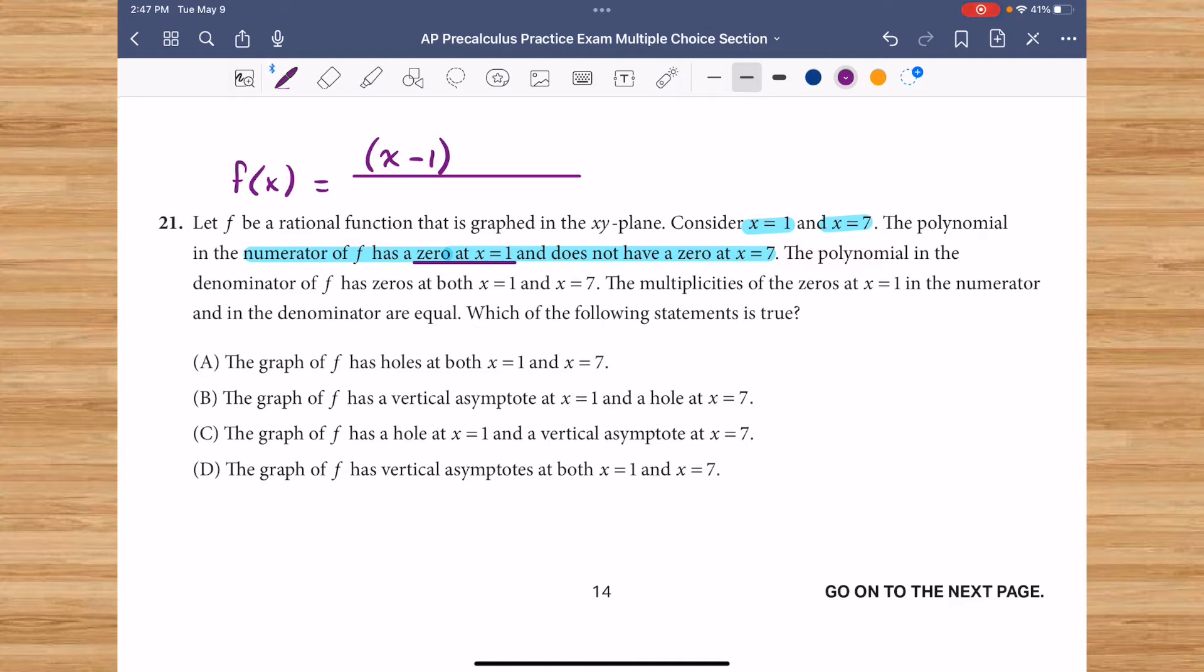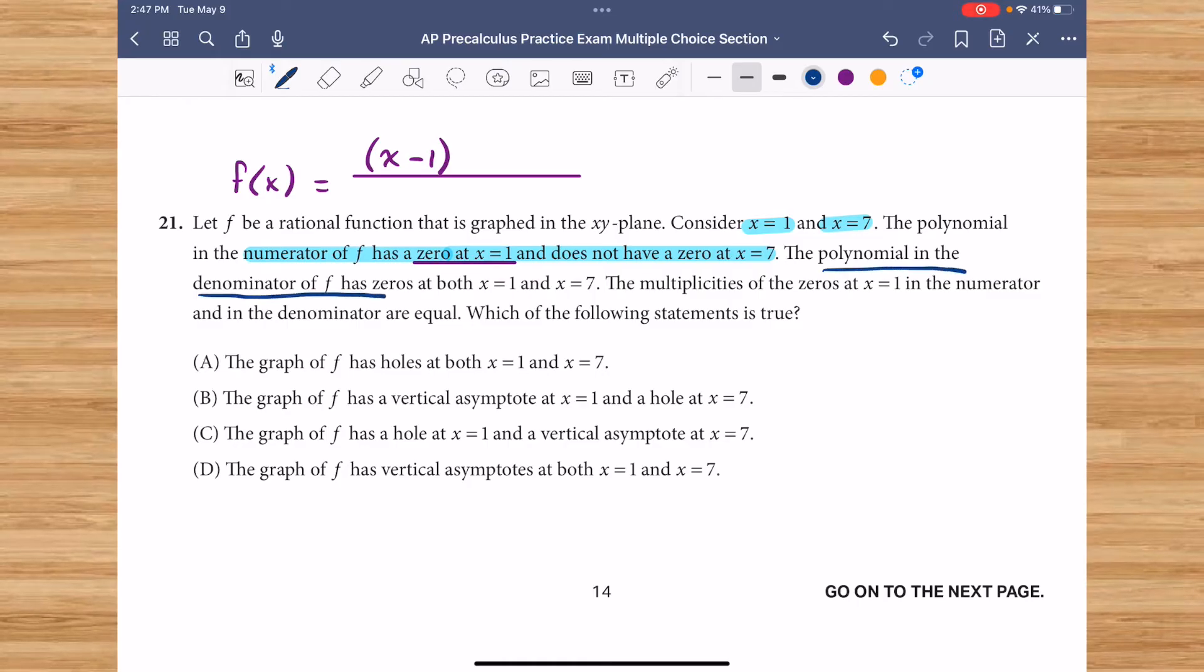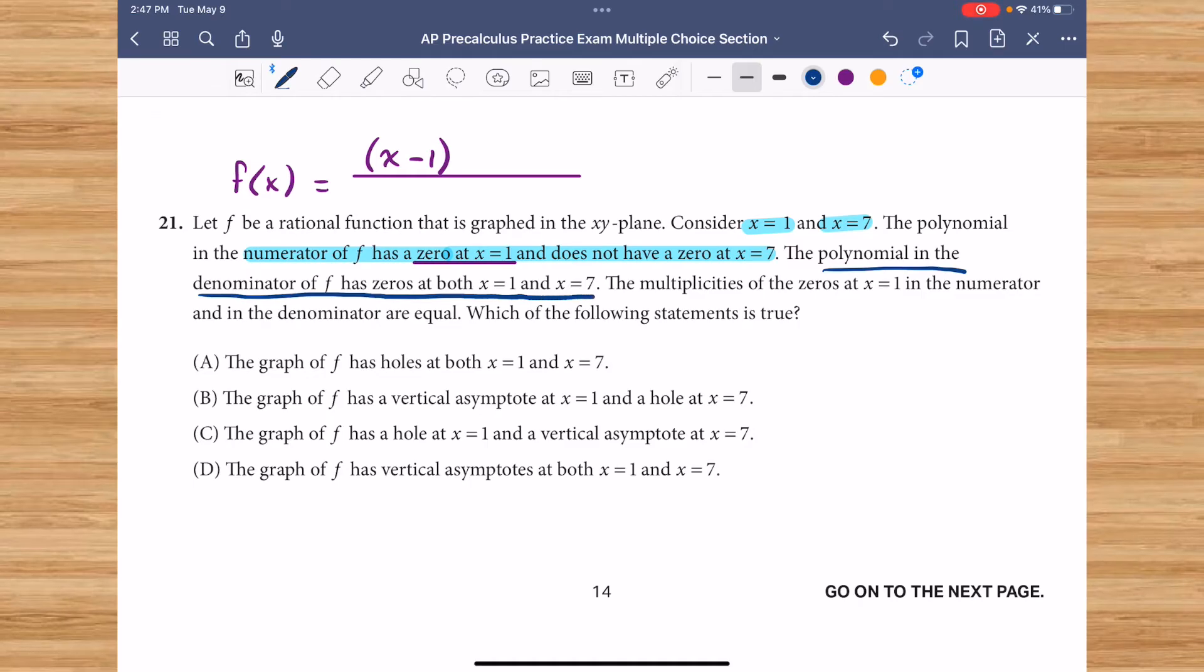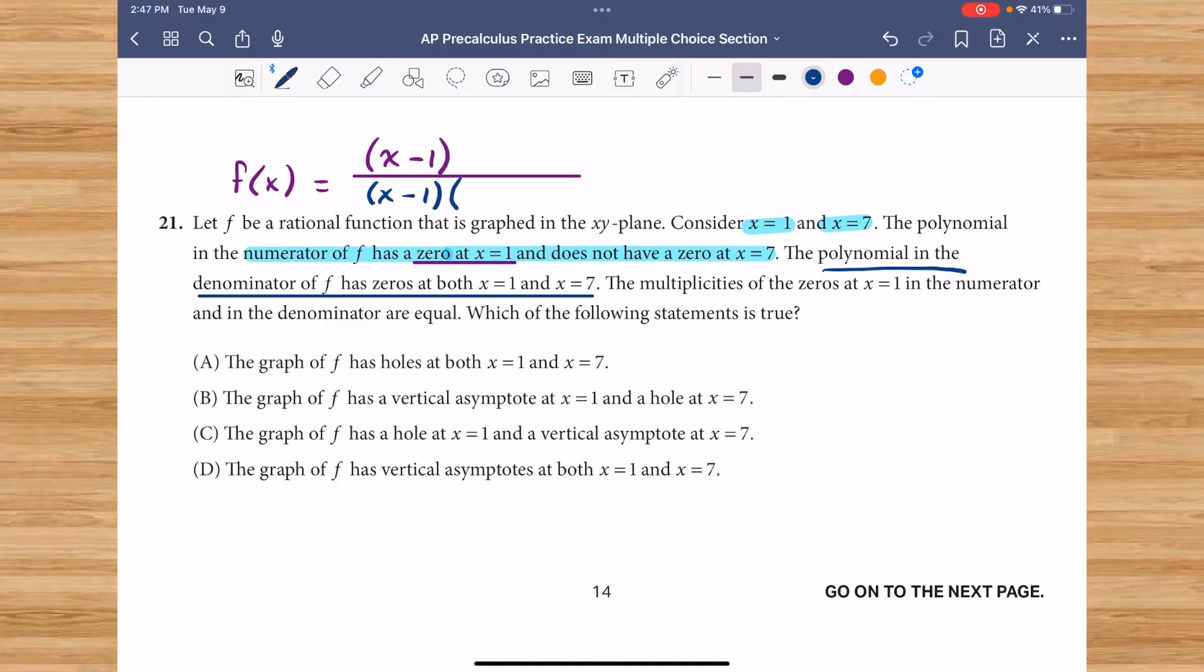The polynomial in the denominator, now we're describing the denominator, the polynomial in the denominator of f of x has a 0 at both x equals 1 and x equals 7. So my denominator is going to have a factor of x minus 1 and going to have a factor of x minus 7.